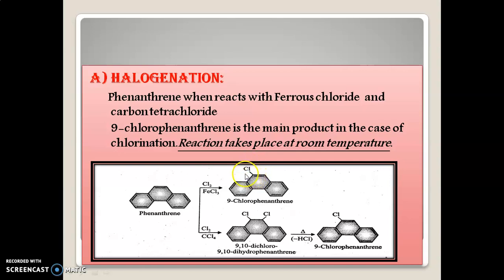The 9th and 10th positions are very reactive in phenanthrene. It is also important to take note of the reaction temperature parameters: this halogenation reaction takes place at room temperature. All reactions have a particular temperature parameter at which they must take place — other than those temperatures the reaction won't give the expected product. So, temperature parameters are very important to be noted. This halogenation reaction takes place at room temperature.